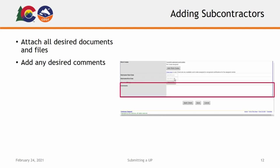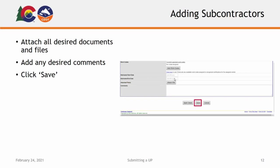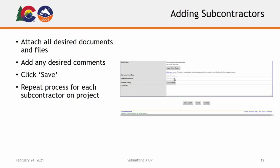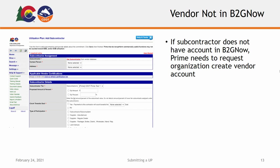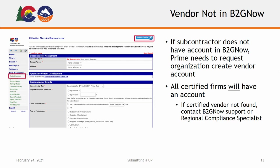Attach the Form 1415 and any other desired files or documents. You can add any desired comments to your utilization plan, then click Save to save the subcontractor information to the utilization plan. You will repeat this process for each subcontractor committed to work on the project. If a subcontractor you wish to add does not have an account in B2G Now, the prime contractor will need to reach out to the organization and request that they create a vendor account in B2G Now. Be aware that any firm that is certified will have an account in B2G Now, so they should be able to be found in the system. If a certified subcontractor does not appear to be in the system, reach out to B2G Now support via the contact support link at the top or bottom of the page, or reach out to your designated CDOT regional compliance specialist for the project.